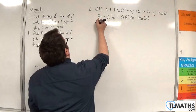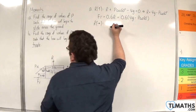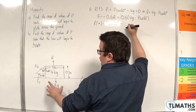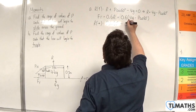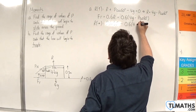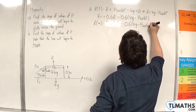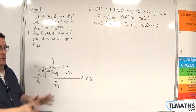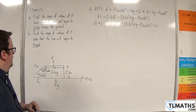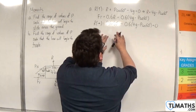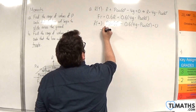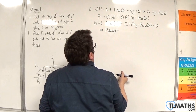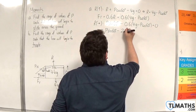Now resolving horizontally, taking to the right as positive, we have P sine 60 take away the friction, which is 0.6 times (4g take away P cosine 60), and that equals 0. Expanding, the friction term gives 0.6 times 4g, which is 2.4g.